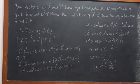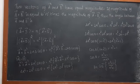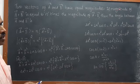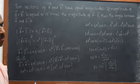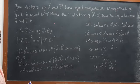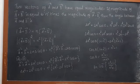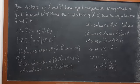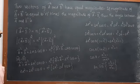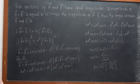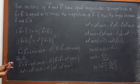Two vectors A and B have equal magnitudes. If the magnitude of A vector plus B vector is equal to n times the magnitude of A vector minus B vector, then the angle between A vector and B vector is what they are asking.